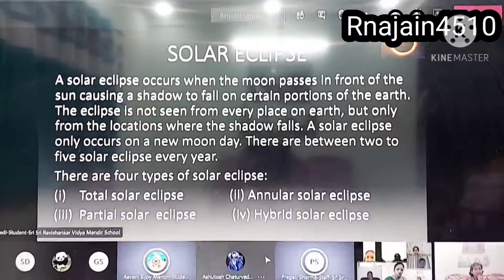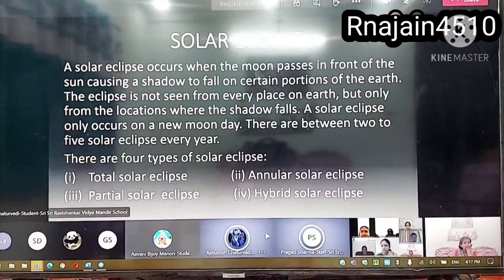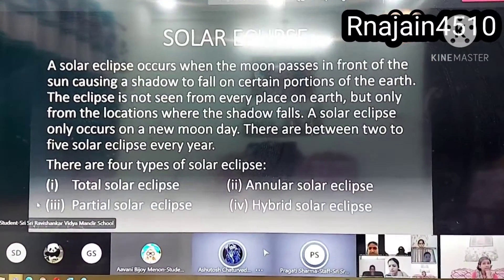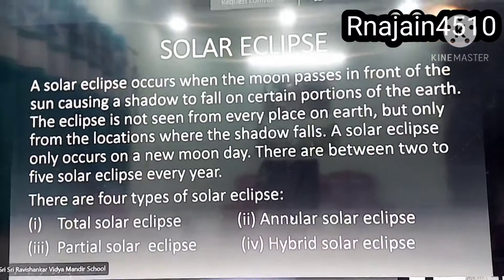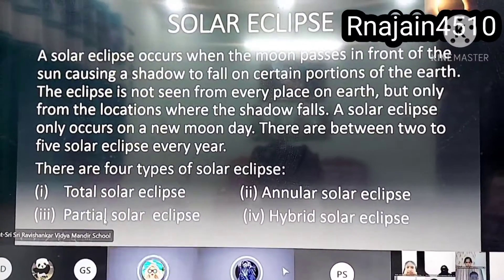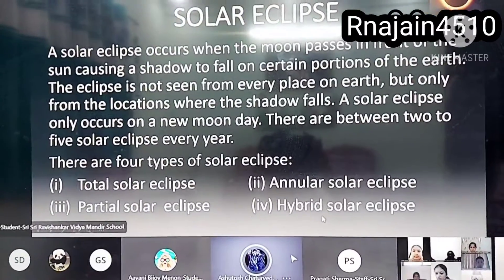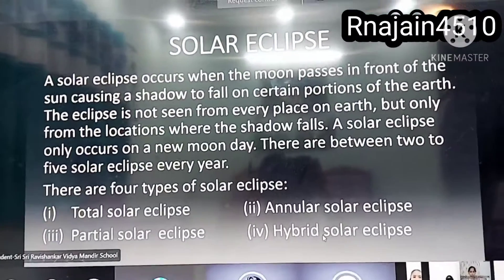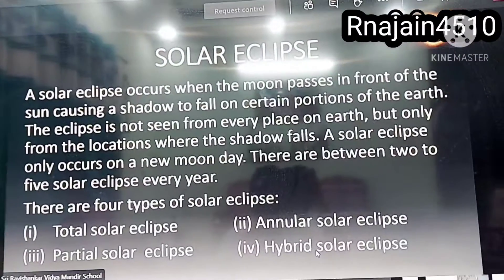There are four types of solar eclipse: total solar eclipse, annular solar eclipse, partial solar eclipse, and hybrid solar eclipse.